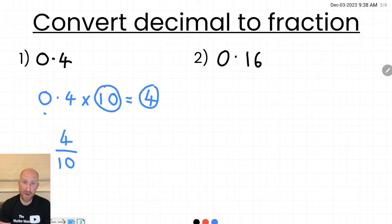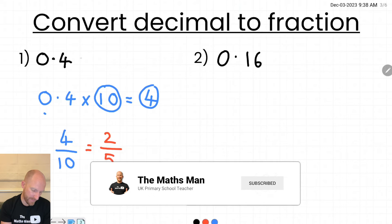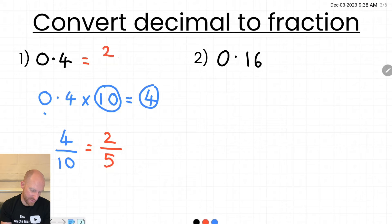And when you have that then you can look to see if it can be simplified. So 4 tenths can be simplified into 2 fifths by just halving those two numbers. So that was the easiest question.